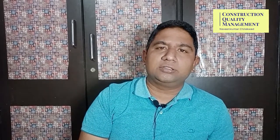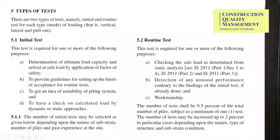The details of individual tests will be covered in separate videos. As an introduction, we will discuss the importance and significance of these tests, codal provisions, and data required. The purposes of initial pile tests are: determination of ultimate load capacity and arrival at safe load by application of factor of safety of 2.5; to provide guidelines for setting acceptance limits for routine tests; to assess the suitability of the piling system; and to check the calculated load by dynamic and static approaches.